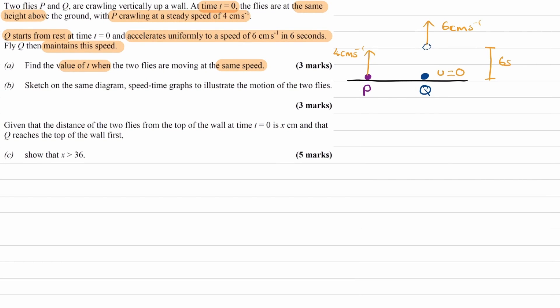So we want to find out the time when the two flies are moving at the same speed. So P is always travelling at the same speed, at 4 cm per second. So for part A, we're basically trying to work out when does Q reach a final speed of 4 cm per second.